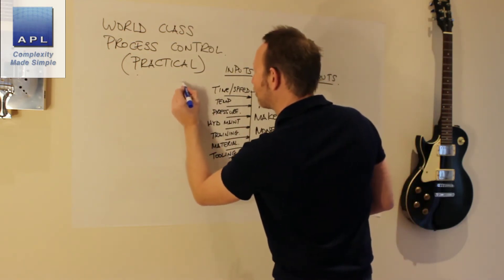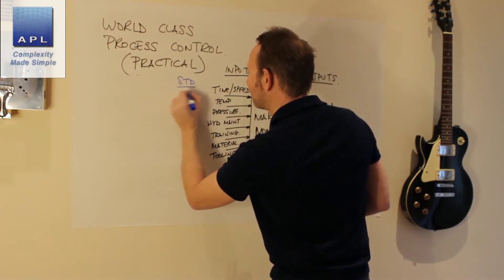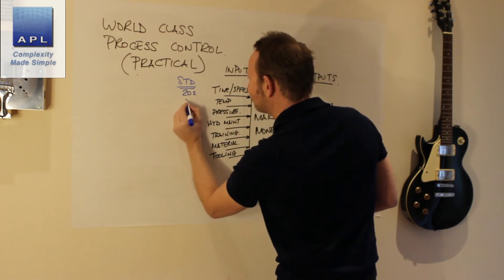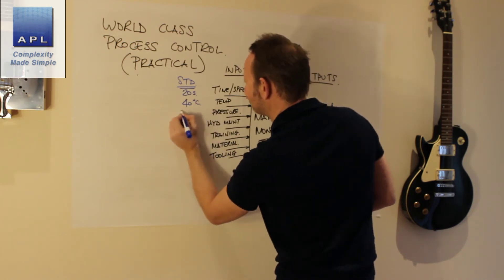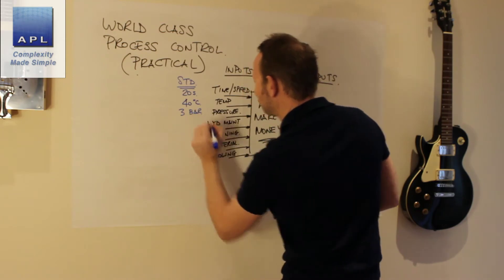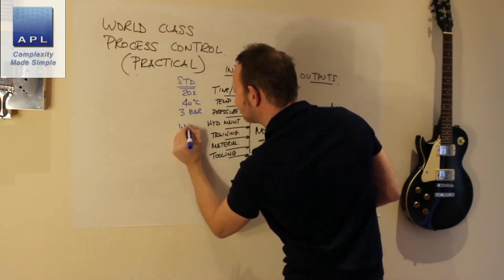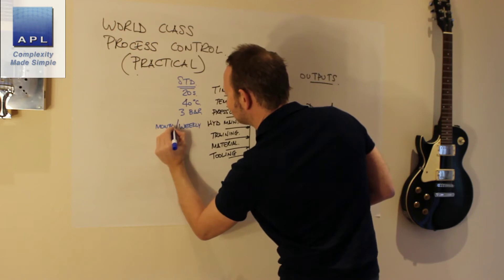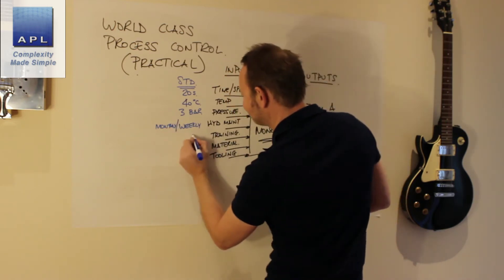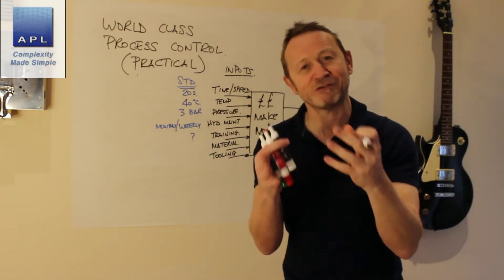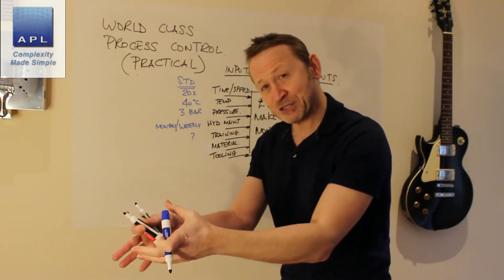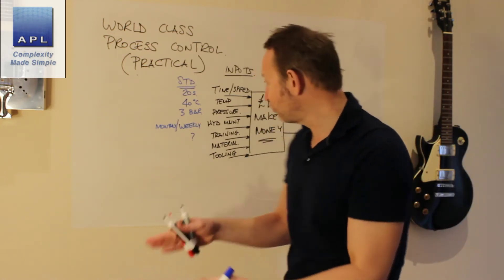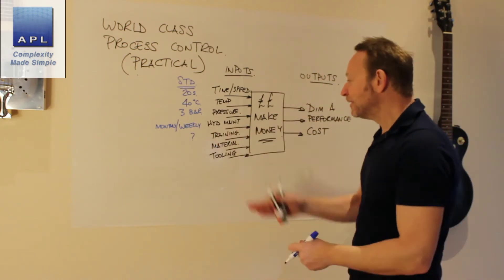What they do is they decide on a standard for each one. So time and speed, I don't know, 20 seconds. Temperature, 40 degrees C. Pressure, 3 bar. Hydraulic maintenance, you go weekly, monthly, etc. Training, you'd have a planned training course. You'd have certain jobs where trained people have to work. Certain jobs where untrained people would work. You would have some rule about that.